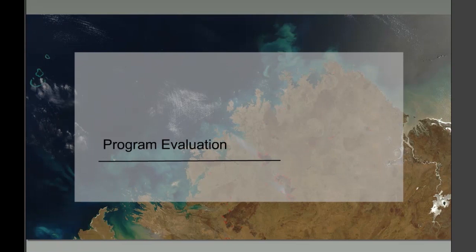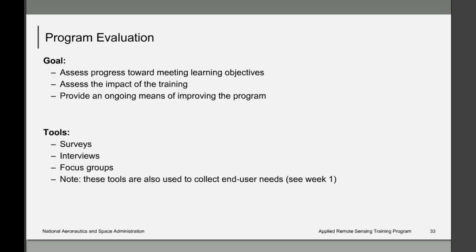The goal of program evaluation is to assess progress towards meeting learning objectives and to assess the impact of the training on participants — in other words, are participants making use of what they learned and how? The purpose is to provide a means of improving the program on an ongoing basis. The most common tools for program evaluation are surveys, interviews, and focus groups. These tools are also useful for collecting end user needs.